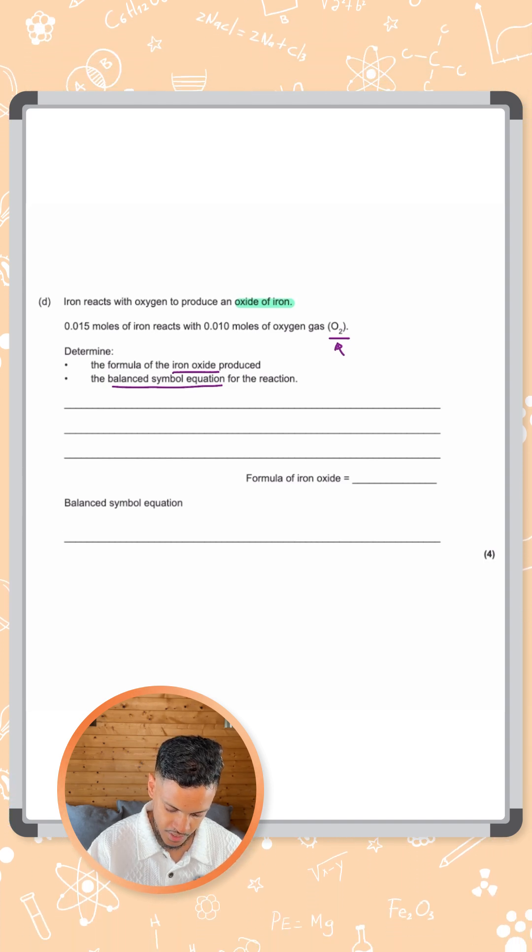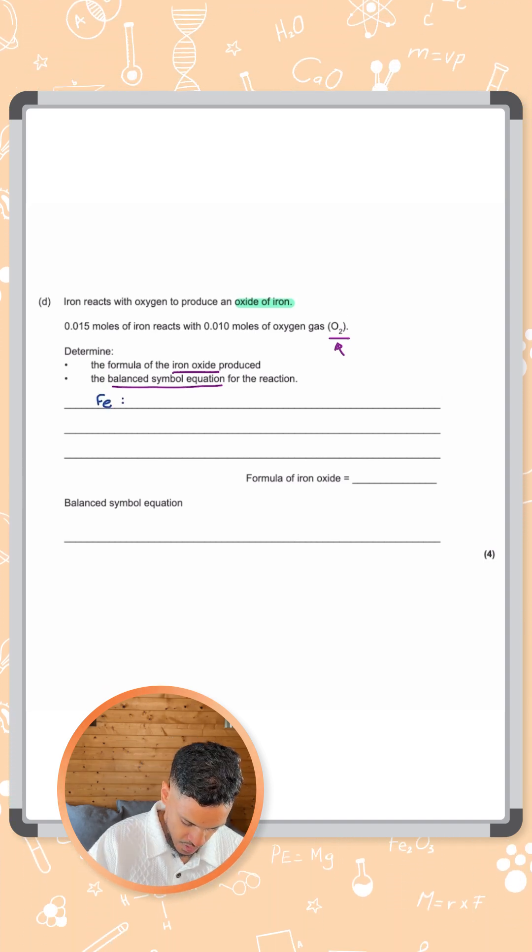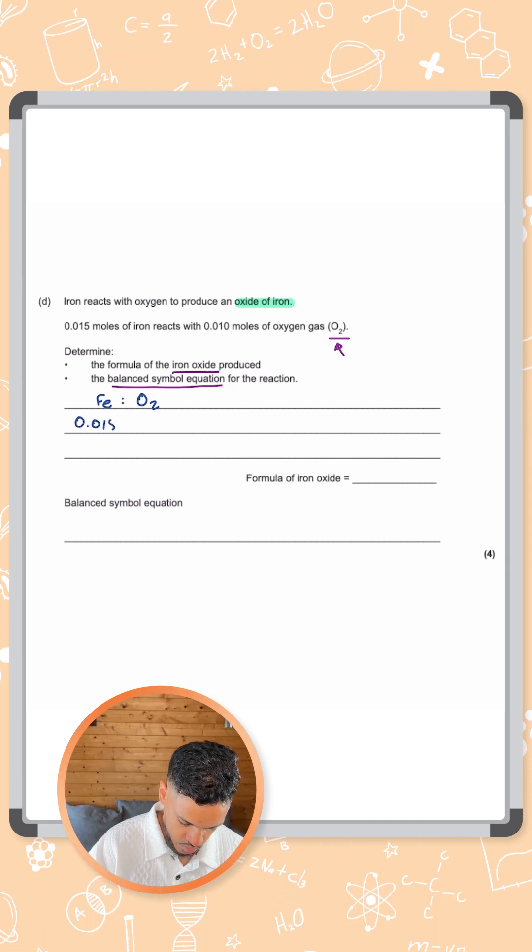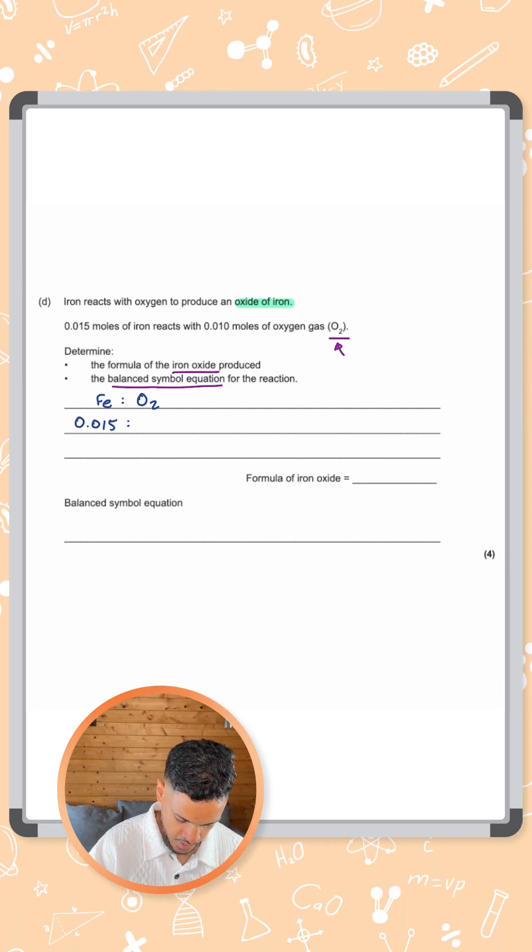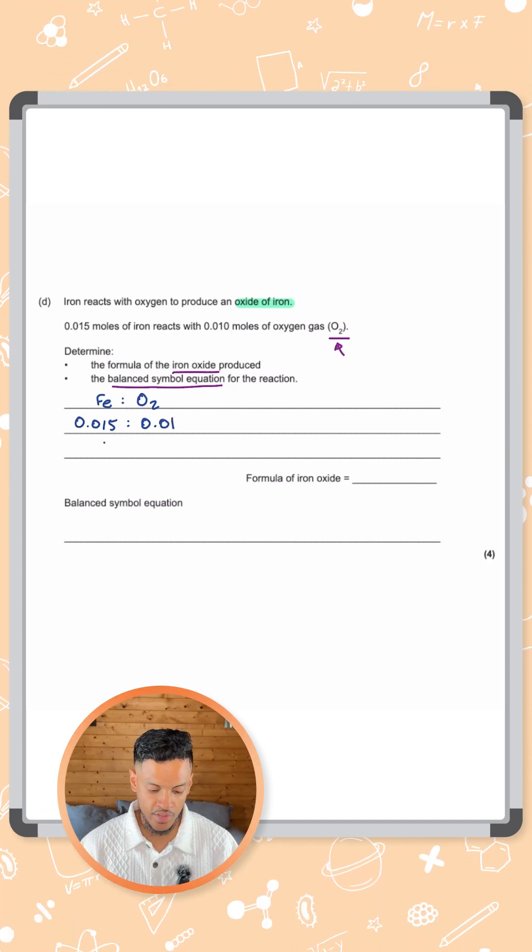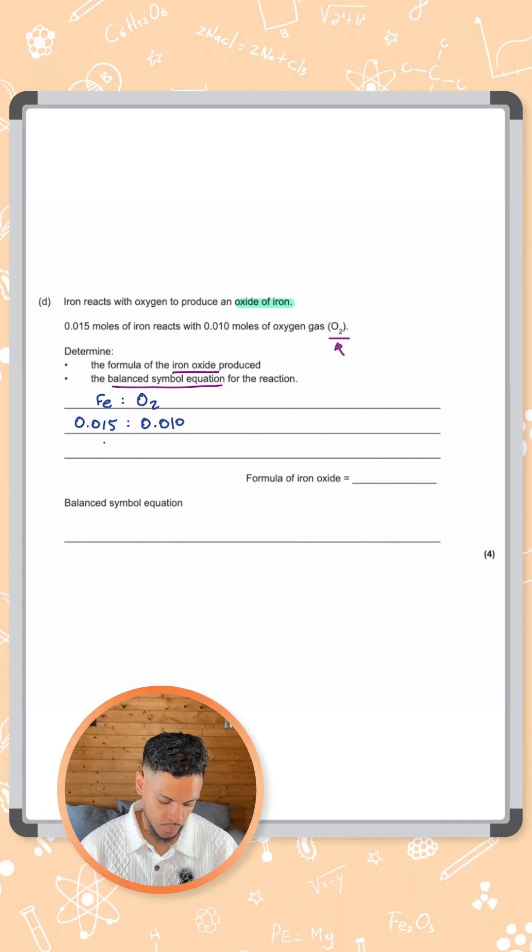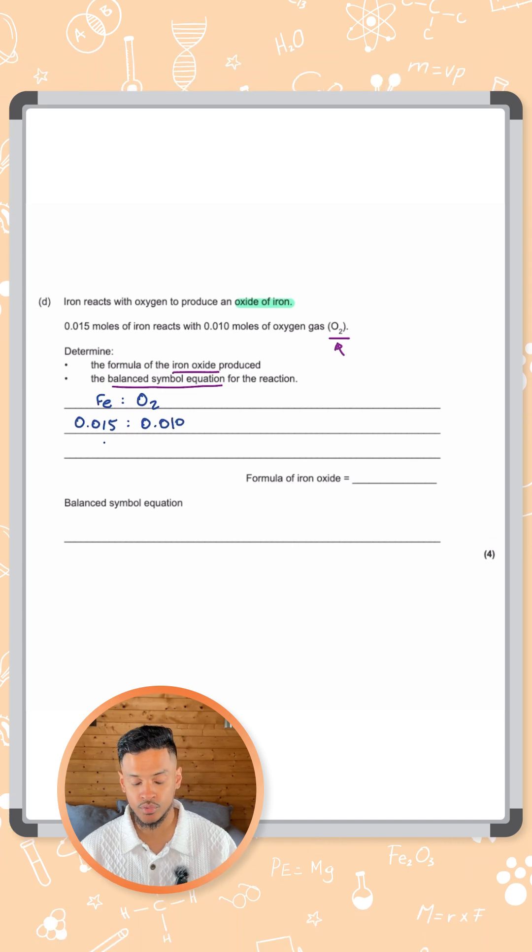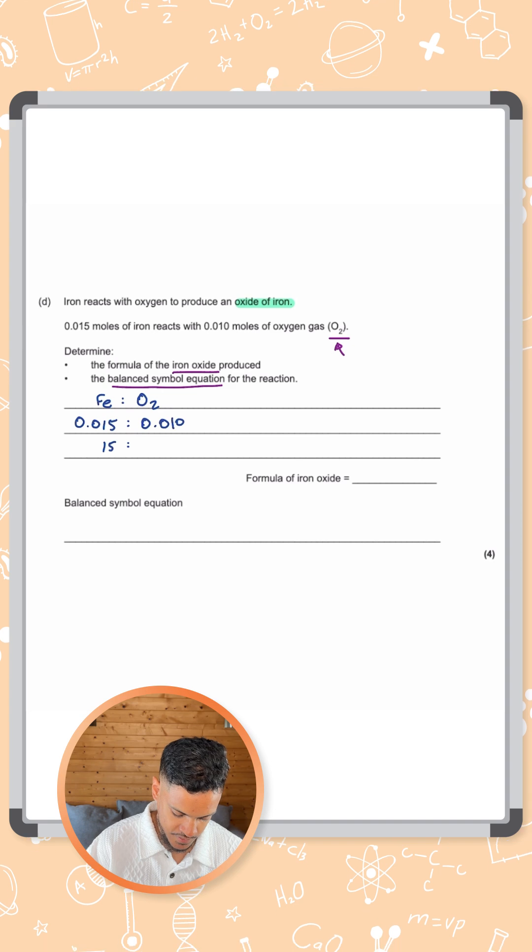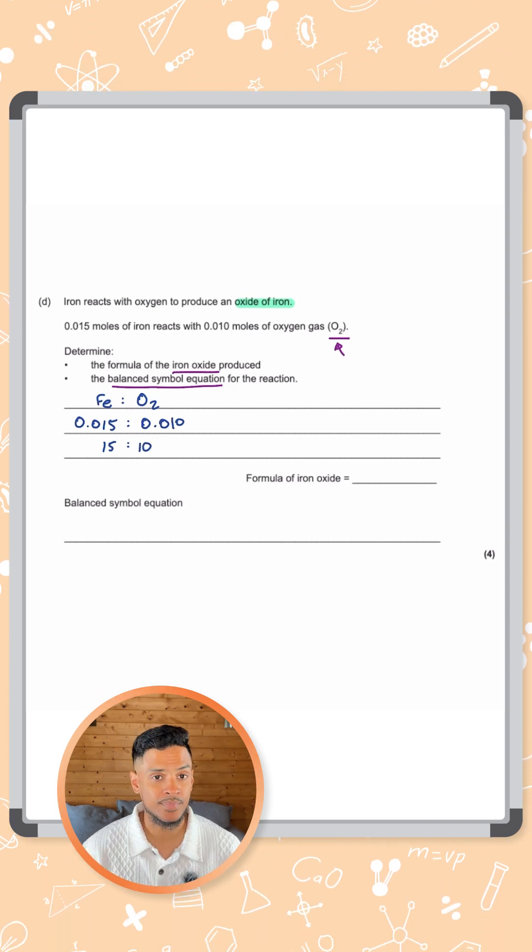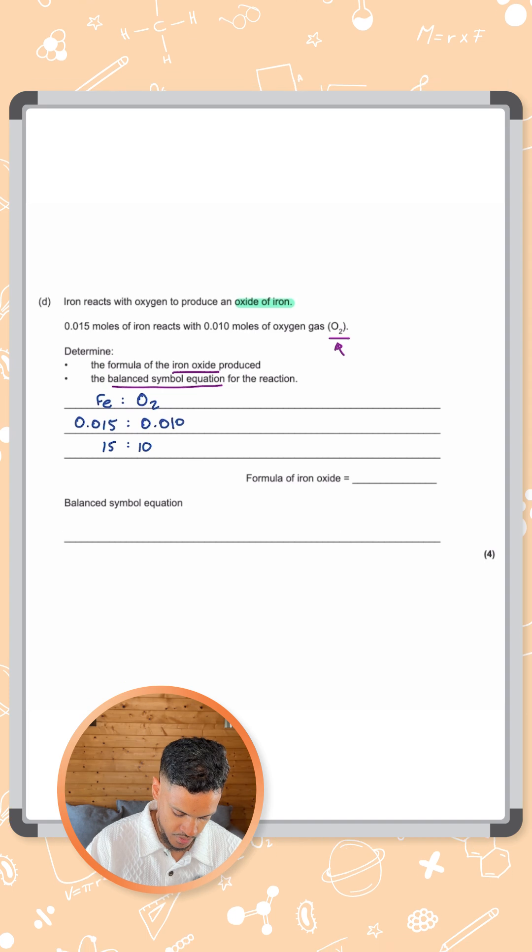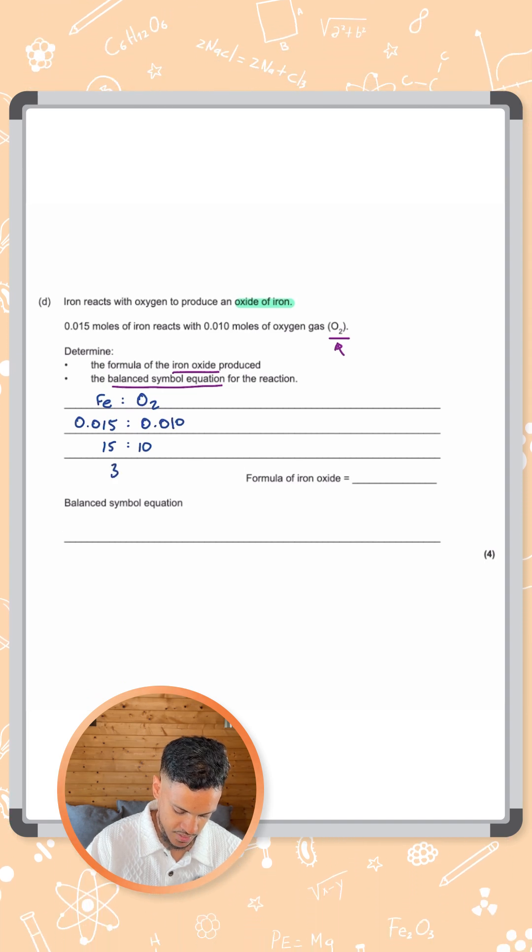Let's look at the ratio that we have here. We have 0.015 moles of iron and 0.01 moles of oxygen. So if we have a ratio of 0.015 to 0.01, we need to simplify that. That's basically saying 15 to 10. You can simplify 15 to 10 if you divide by 5 on both sides to get a ratio of 3 to 2.